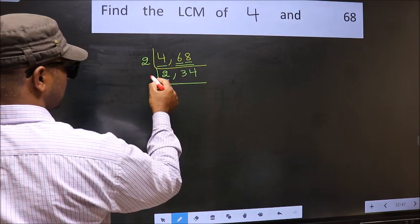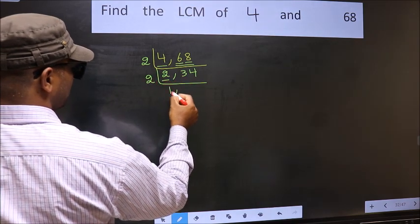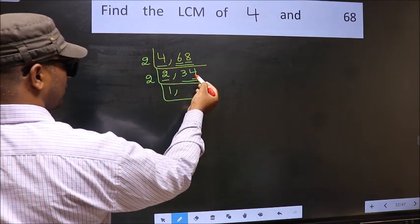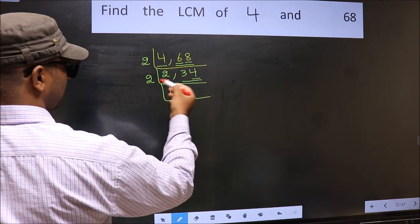Now here we have 2, 2 is a prime number. So 2, 1's 2. The other number 34. Last digit 4, even. So this number is divisible by 2.